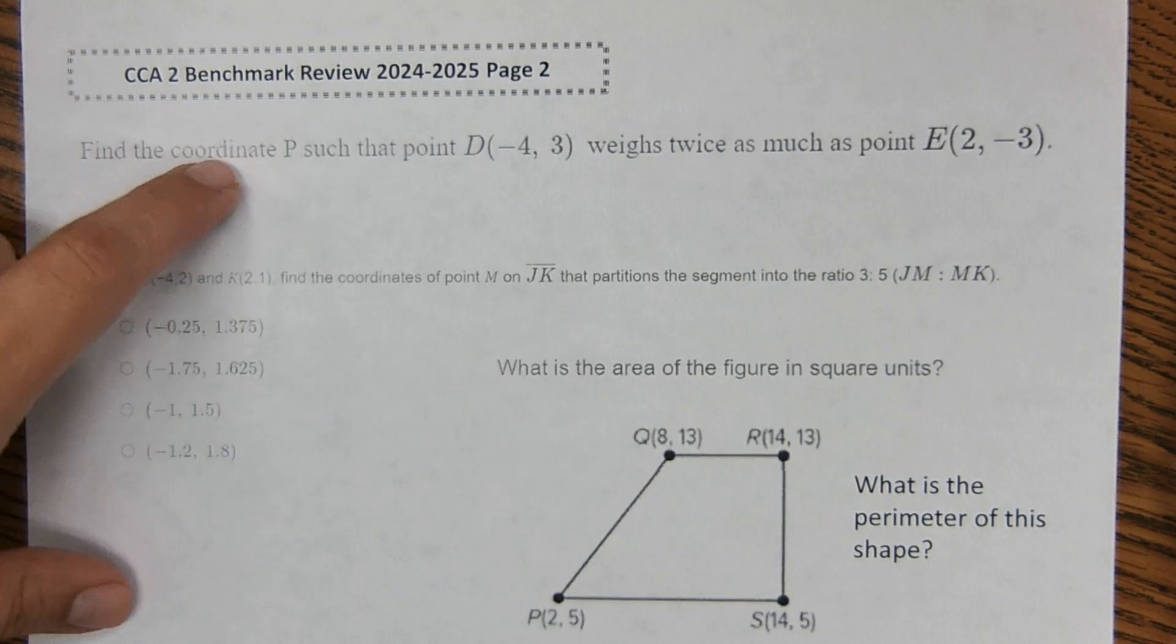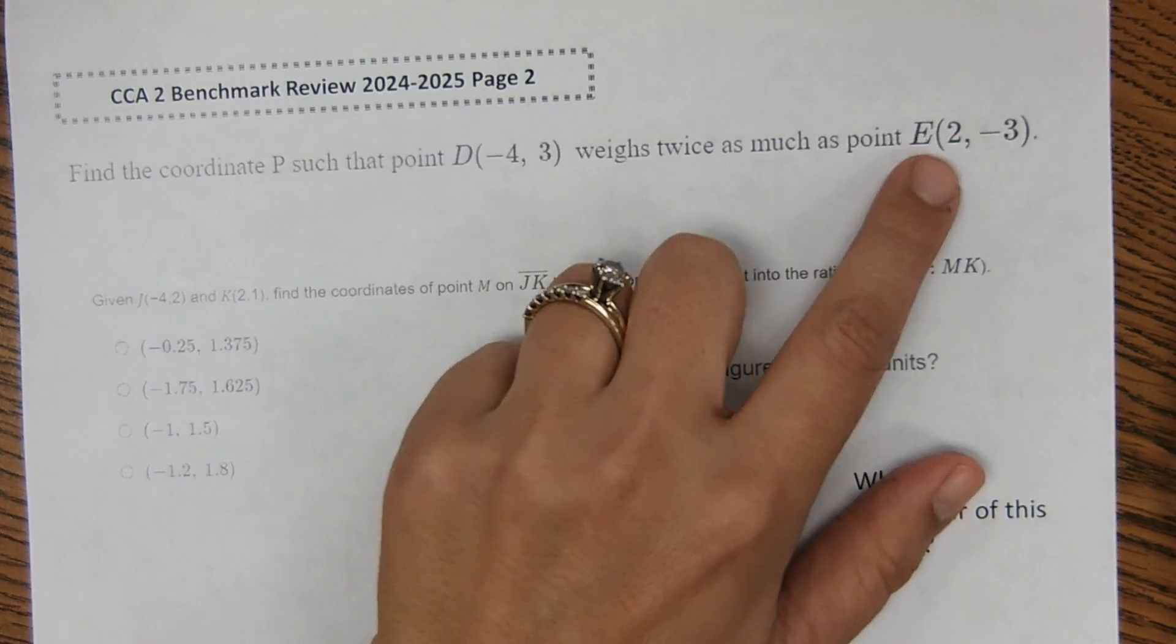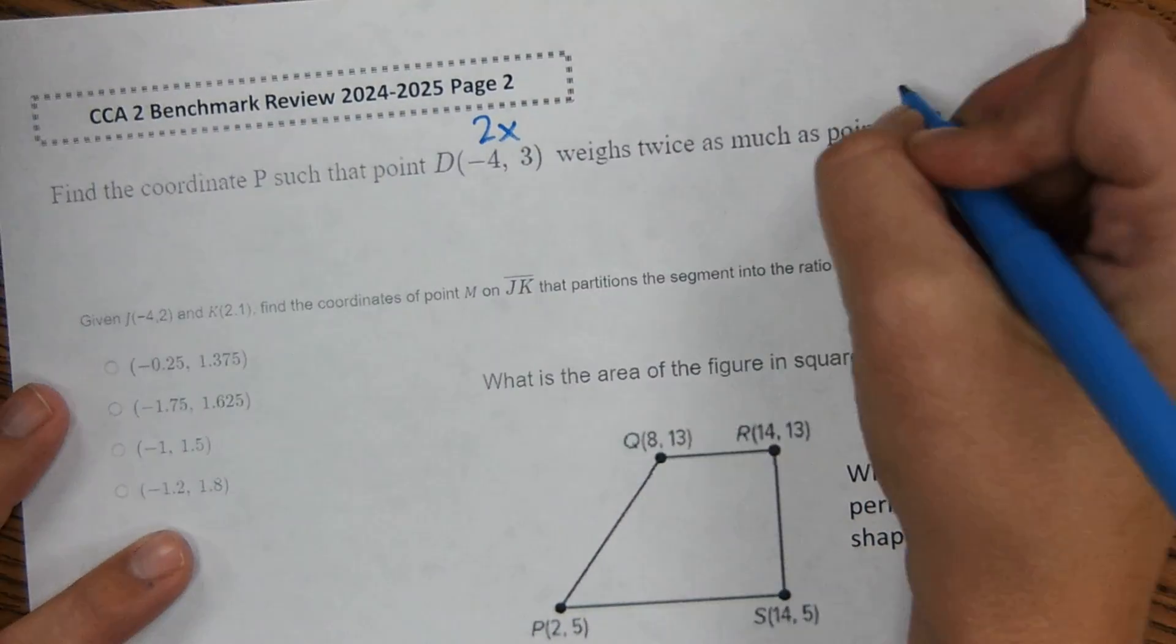Okay, this one right here says find the coordinate P such that D has a weight twice as much as point E. So this weight is like two times and this weight is one time.